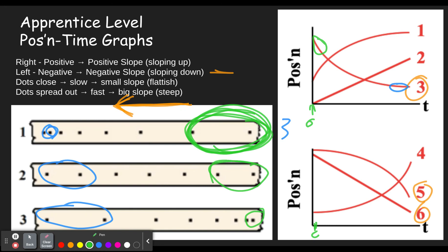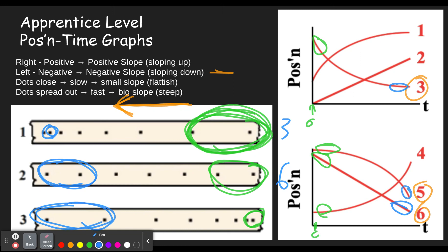The next dot diagram starts out at medium speed and ends at the same medium speed all the way along — the dots are evenly spaced. We find one that starts and ends at the same medium pace, so this must be number six. The final one starts off going really slow, so we look for one that starts off slow. Graph five starts off going really slow — graph four also starts slow but it's sloped up, meaning rightward. This dot diagram ends moving very fast, and five ends very fast. So this must be number five.